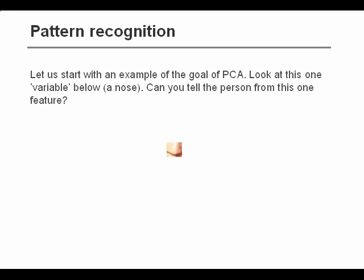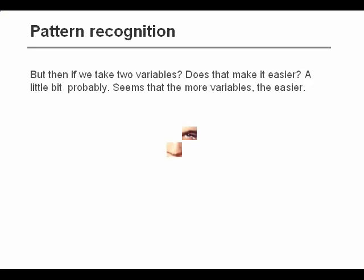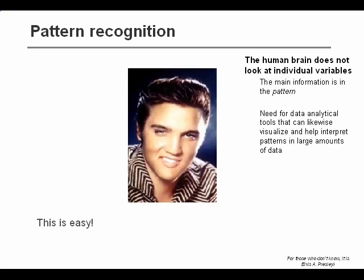That's not very simple in this case, but we could look at another feature or variable instead — for example, the eye — or we could look at both simultaneously. And even though it helps to look at both, it's not really simple to see which person it is. But if we look at the whole image, there's absolutely no problem.